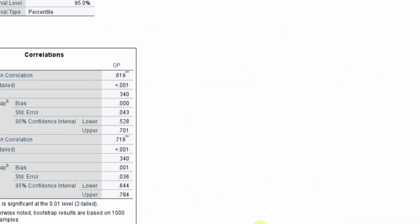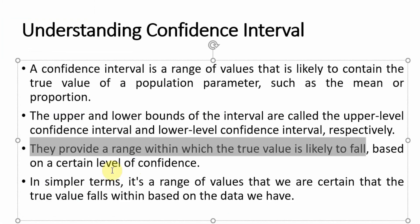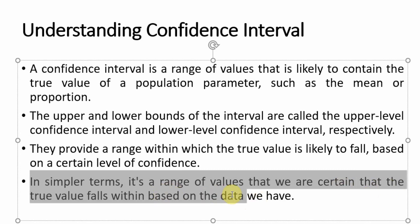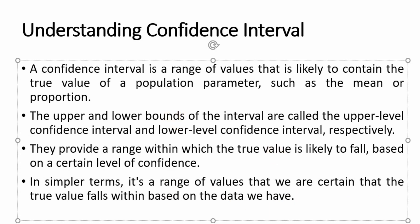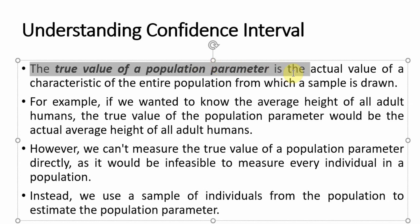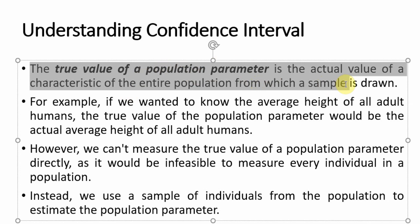So the true value of the correlation is likely to fall between the lower and upper confidence interval. For example, the true value for the correlation between development and organizational performance is likely to fall between 0.644 and 0.784. In simpler terms, it is a range of values within which we are certain the true value falls, based on our sample data.